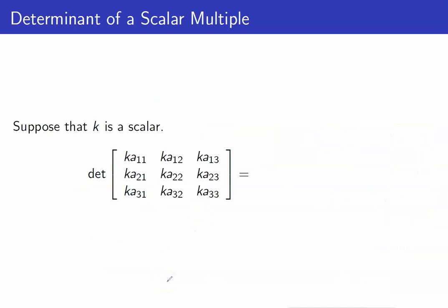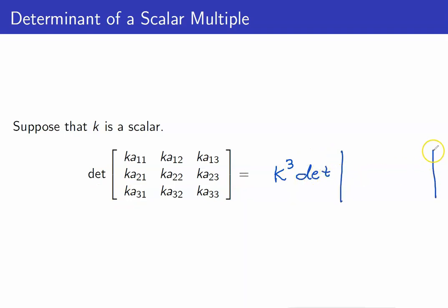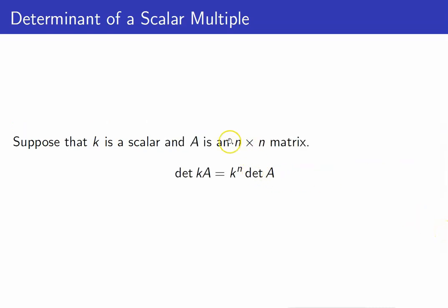Next, we want to investigate the determinant if we multiply a matrix by a scalar k. Previously, we've learned that we can pull out the common factor for each row — we can pull out k from each row. So therefore, we will end up with 3 k's being pulled out and then the determinant of the original matrix. We can generalize this result for an n by n matrix: we can pull out k from each of the n rows. Hence, the determinant of k times A is equal to k raised to n times the determinant of A.